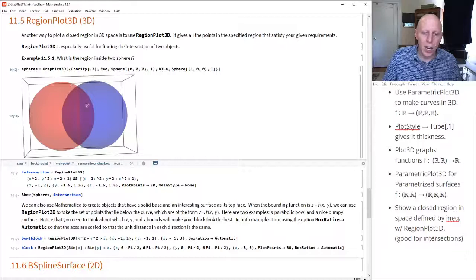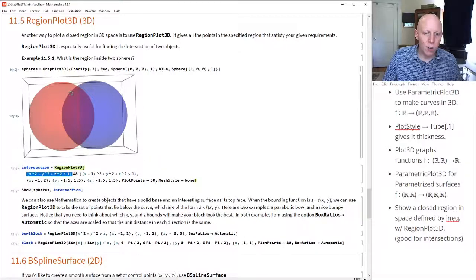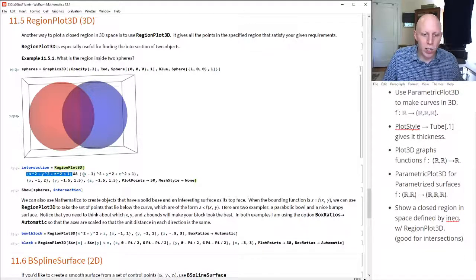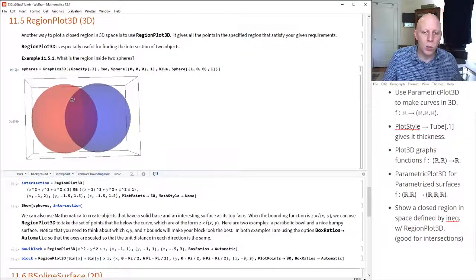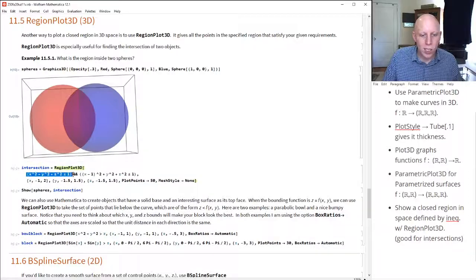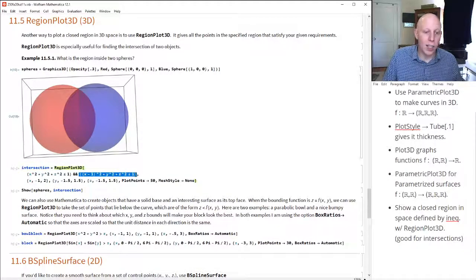So how can we do that? Well, let's create a region that is this sphere, this red sphere. Well, the points in that red sphere are all points of the form x² + y² + z² is less than or equal to one. So the center here is zero, zero, zero. The distance is one. In the blue sphere, we've now moved one unit in the x direction. And so it has the same radius. So the equation of the blue sphere would be (x - 1)² + y² + z² all less than equal to one. So what we'd like to do is we'd like to use region plot 3D to find all points that satisfy the first inequality and that satisfy the second inequality.